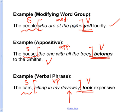Going back to the parts of a sentence video, we were taught how to recognize modifying word groups, appositives, and verbal phrases. In general, they are groups of words that describe a word. In these cases, each of these groups of words describe the subject. Groups of words that describe something are not going to be the subject or main verb of the sentence.